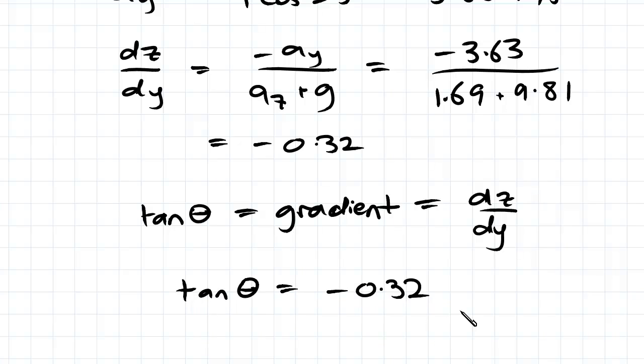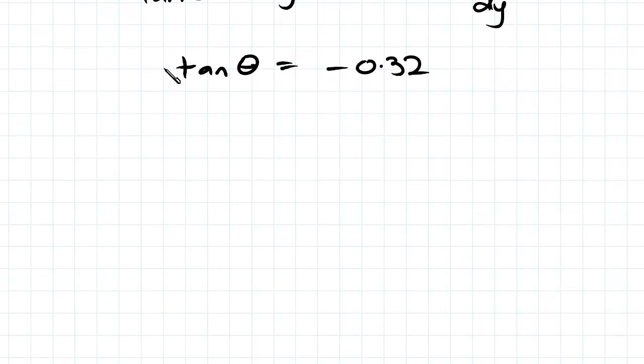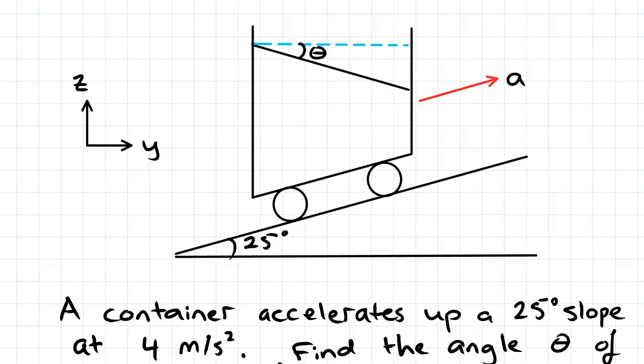And if we inverse that, we'll get theta equal to negative 17.5 degrees from the horizontal. So looking back at our example, that's 17.5 degrees down from the top, which is why it's a negative value.